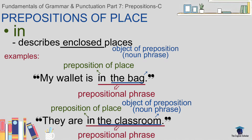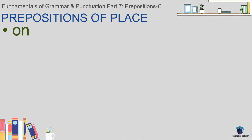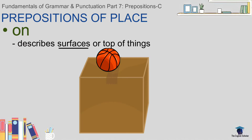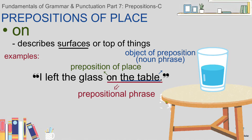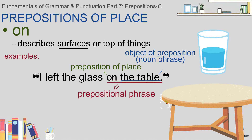They are in the classroom — meaning my wallet is inside my bag, they are inside the classroom. Next: 'on.' 'On' describes surfaces or the top of things, and the item should touch the surface of the other thing. If it does not, a different preposition is required. For example: 'I left the glass on the table' — meaning the glass is on the surface of the table, touching it, and the glass should not float over the table.